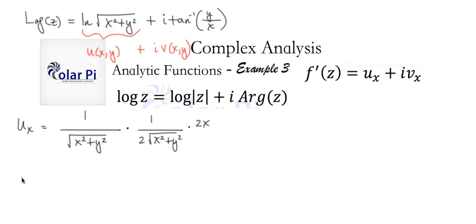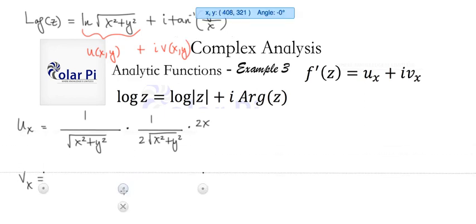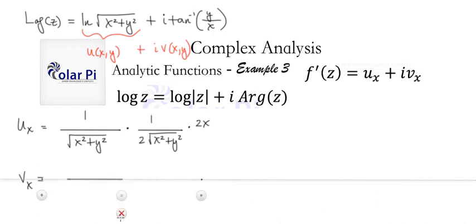And then vx, the partial with respect to x of this is going to be 1 divided by 1 plus y over x all squared, which is y squared over x squared. So let me write that instead, y squared over x squared. But then by chain rule, we also have to multiply by the derivative of this, sorry, I can't speak, which is negative y divided by x squared, right? Okay, cool.